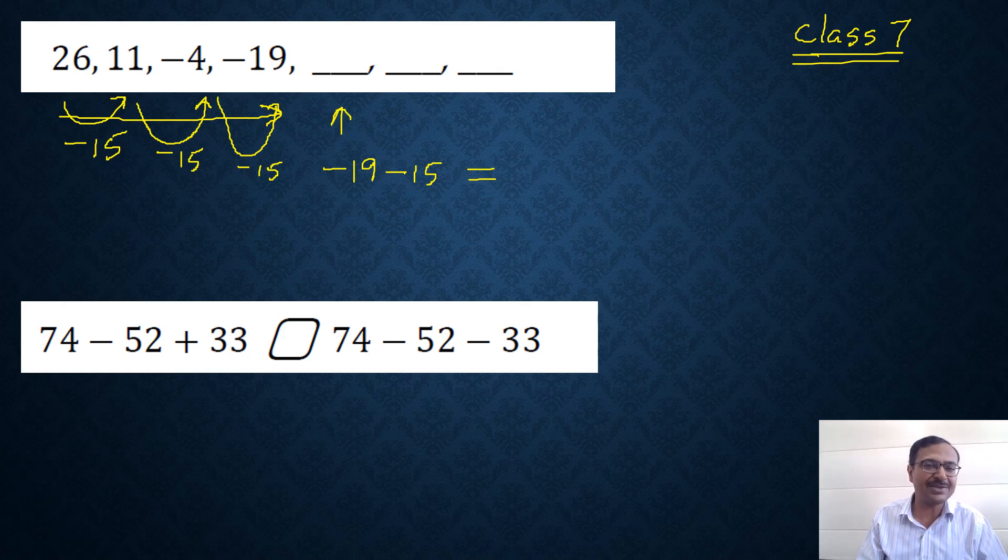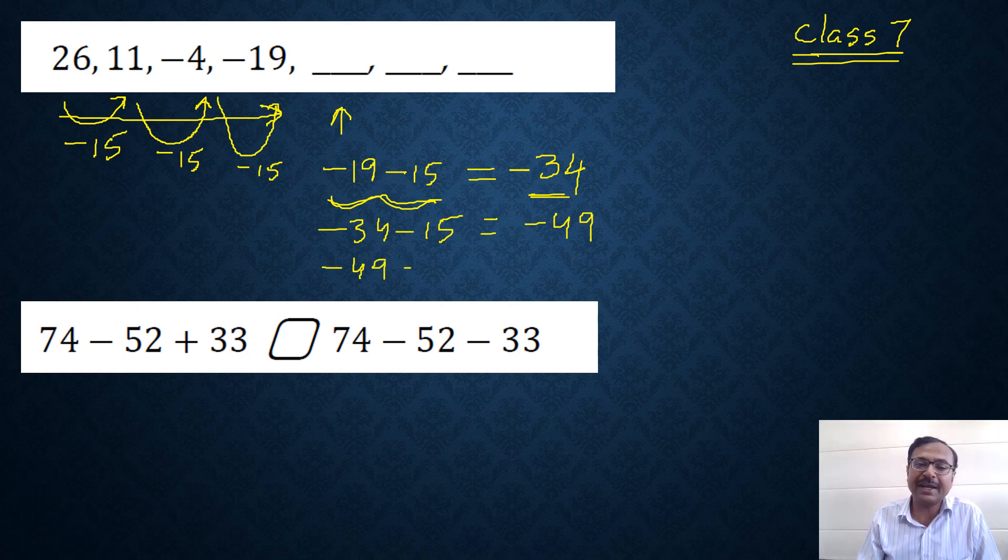Negative and negative make a positive. We need to add the integers 19 and 15, which is 34, and since both integers are negative, the result will also be negative. So we have negative 34 in the first blank, then negative 34 minus 15 which is negative 49, and negative 49 minus 15 will be negative 64.